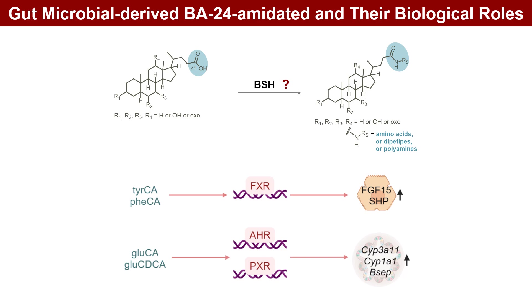Glutamato-CA and glutamato-CDCA activate PXR and AHR, enhancing the expression of CYP3A1, CYP1A1, and PSEP.